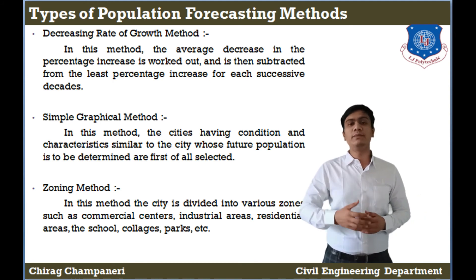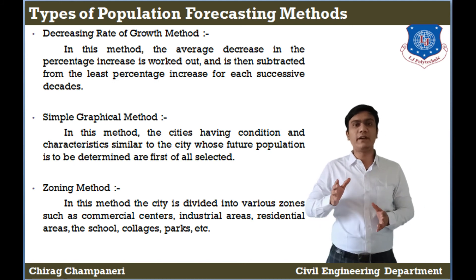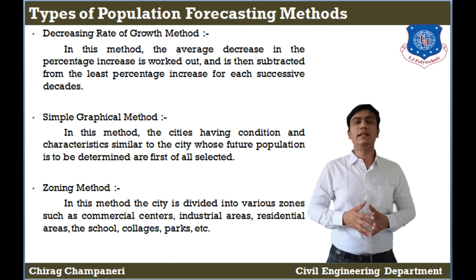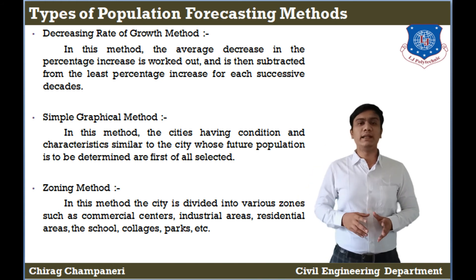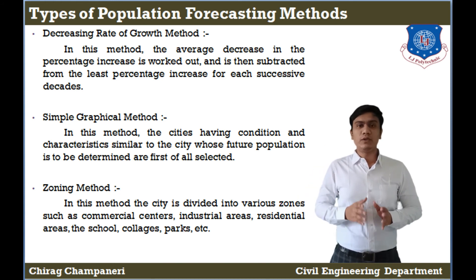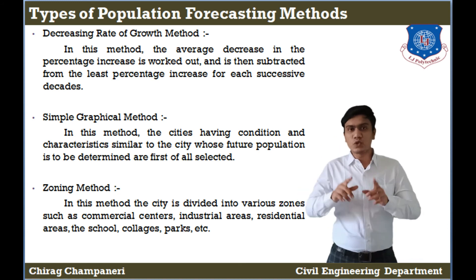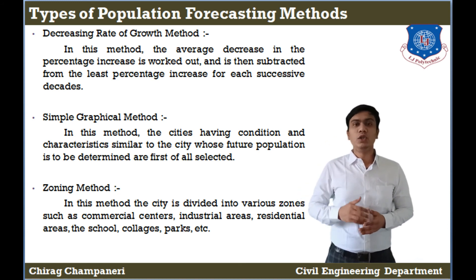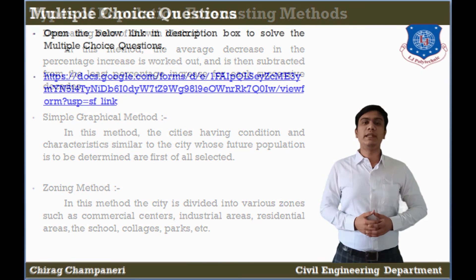The next method is the Zoning Method. In this method, for a particular town, we divide it into different zones — such as institutional zones, hospitality zones, and residential areas. According to these different zone types, we divide and find the population for each. This is called the Zoning Method.